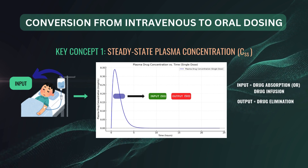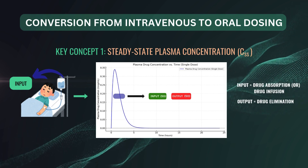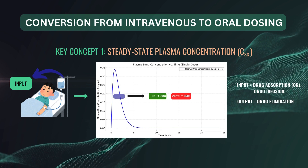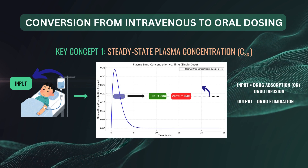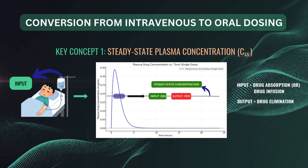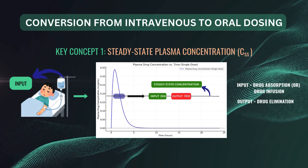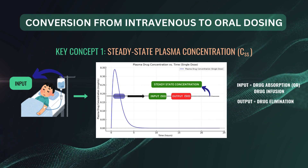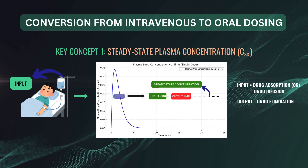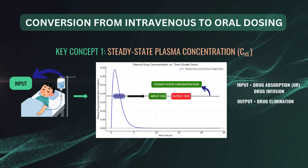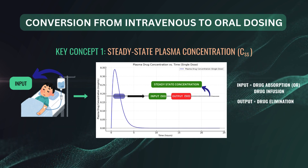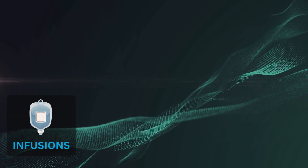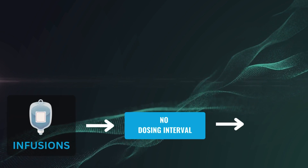At a specific point, the input and output become equal — for example, input equals 50 and output equals 50. This is the point where a plateau is reached, called the steady-state concentration, CSS. At steady state, input (absorption or drug infusion rate) equals output (elimination rate), and plasma drug concentration remains constant because the rate of drug entering the system matches the rate of drug leaving. Because IV infusions have no dosing intervals, we can observe a steady-state concentration.